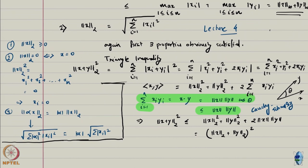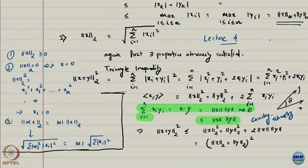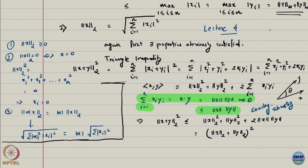What about the triangle inequality for the 2-norm? Here we need a little bit of work. We look at the 2-norm of x plus y, which by definition equals the square root of the sum of (x_i + y_i)^2. Expanding inside the bracket and noting that the quantity inside is actually non-negative — it is x plus y squared — so it is exactly this.